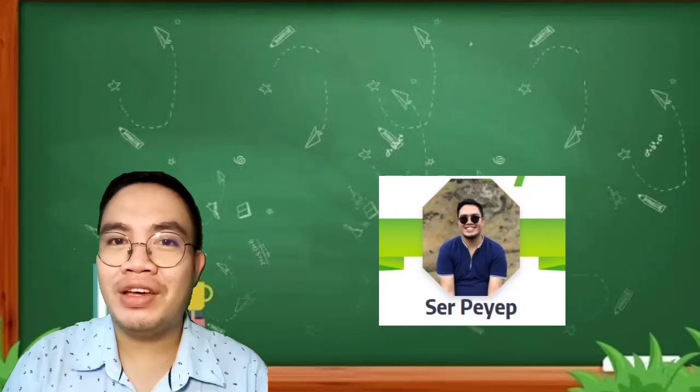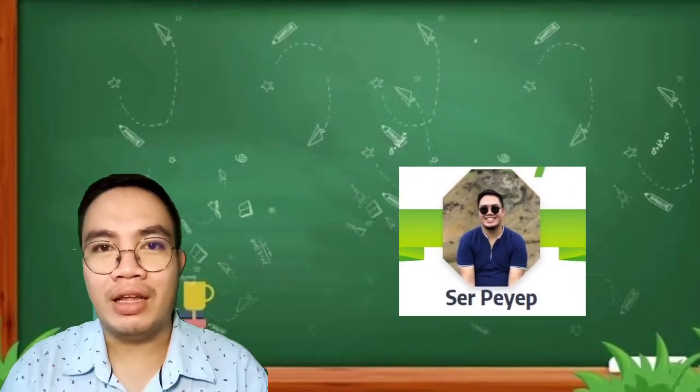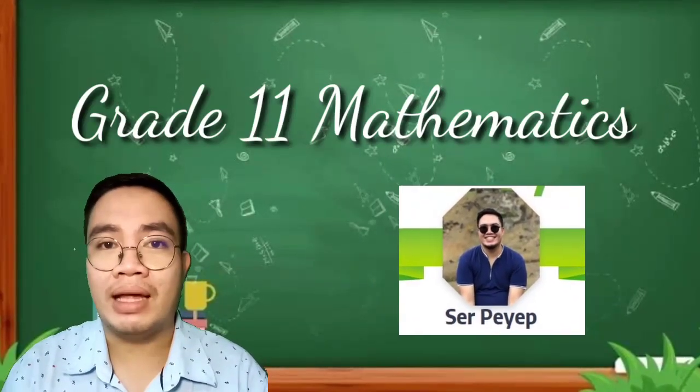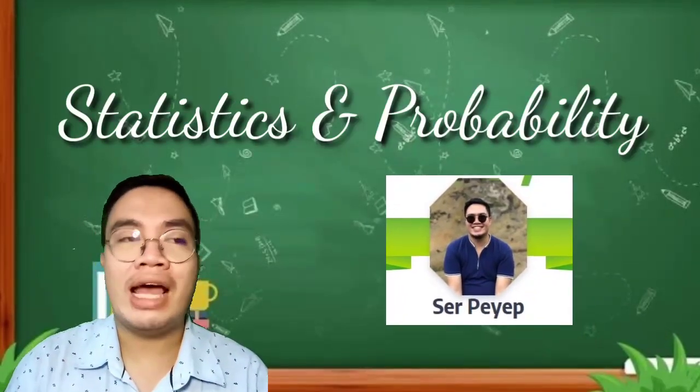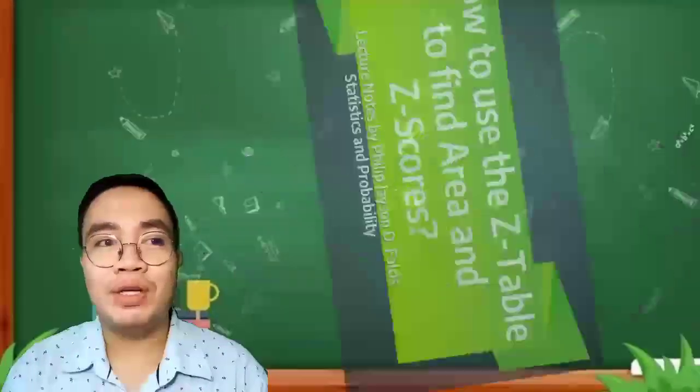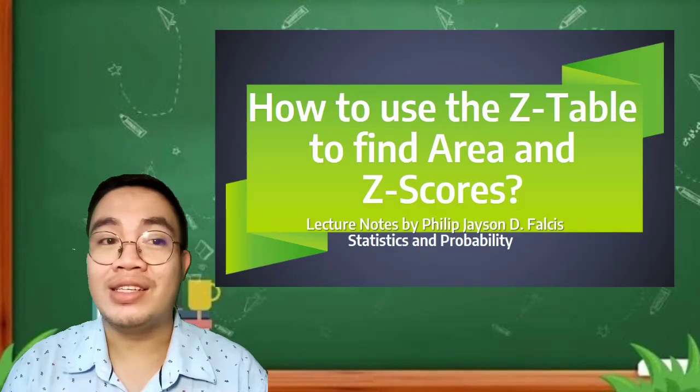For today, I will be giving you a discussion about an important topic in grade 11 mathematics and statistics and probability, which is how to use the z-table to find the area and the z-scores.